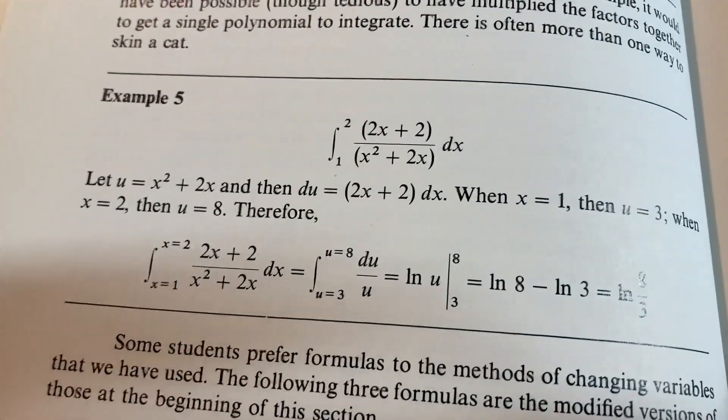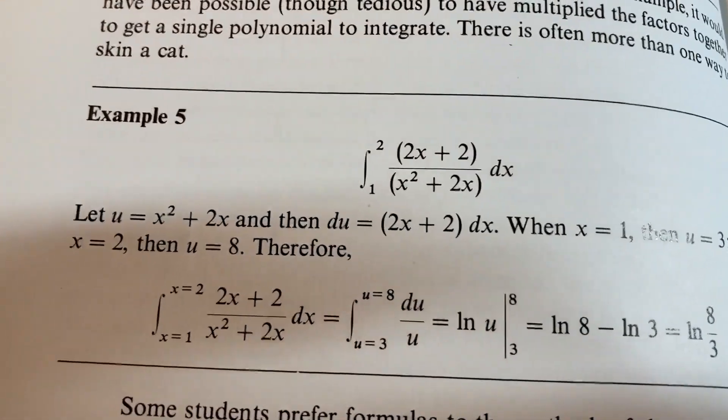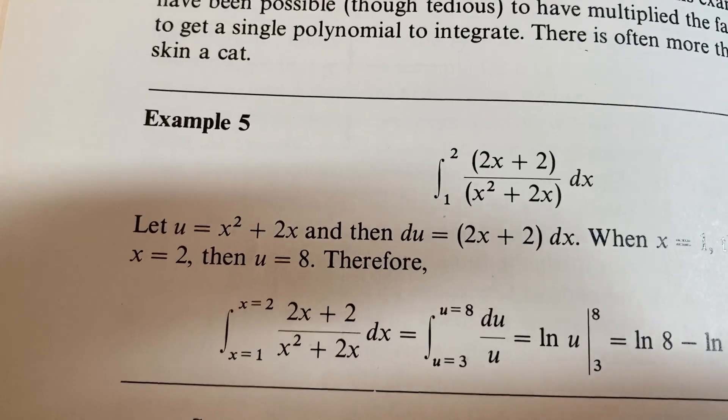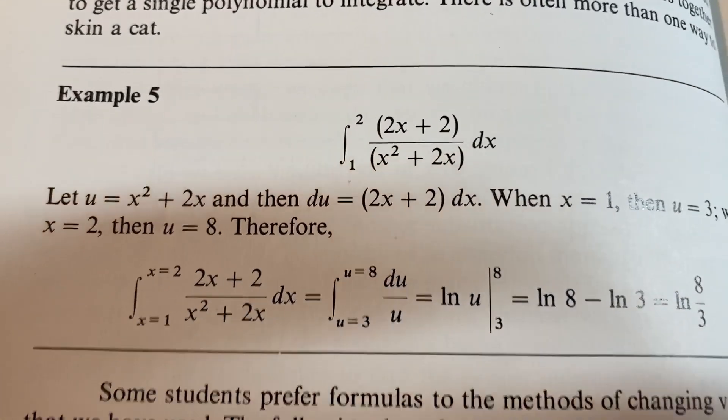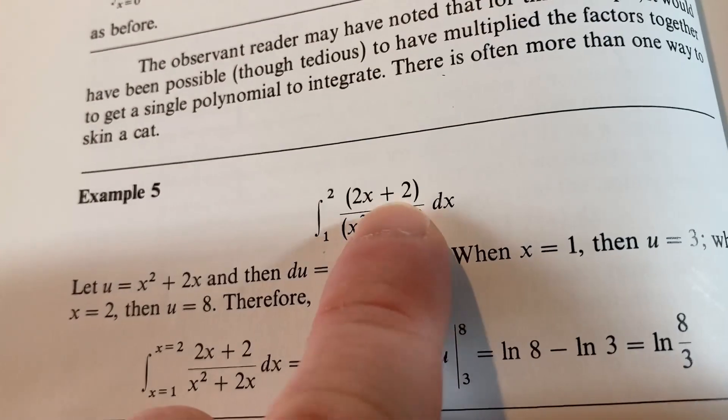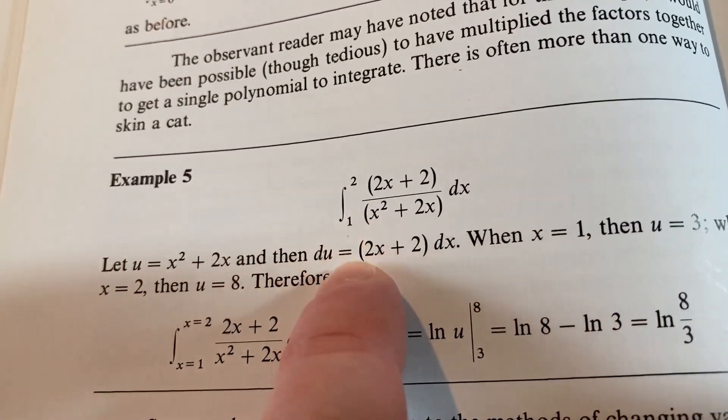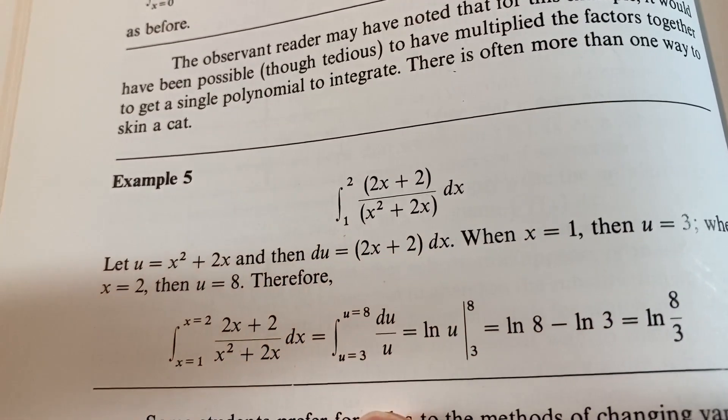So here we have an example of u substitution. And it's a definite integral. So they change the limits of integration. Look how clean this is. It says, let u equal x squared plus 2x. Then du is 2x plus 2 dx. That's the entire denominator there.